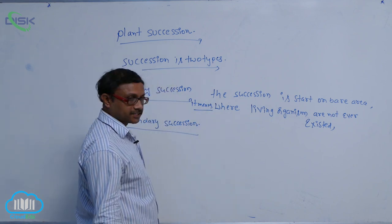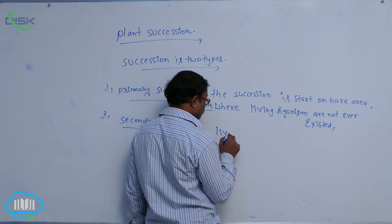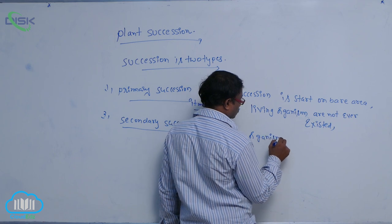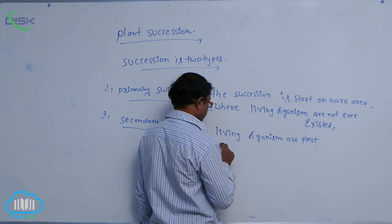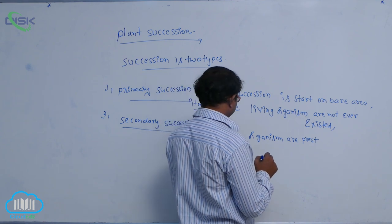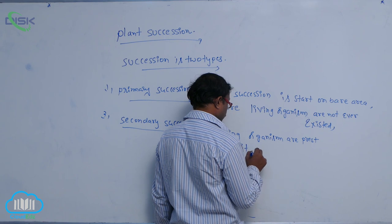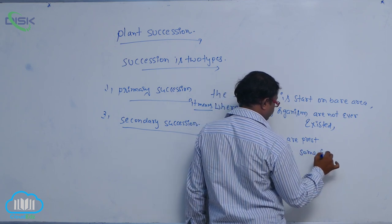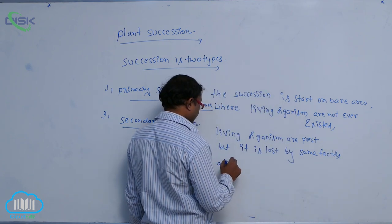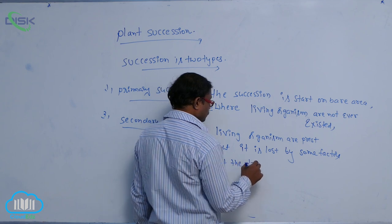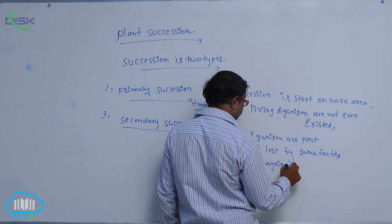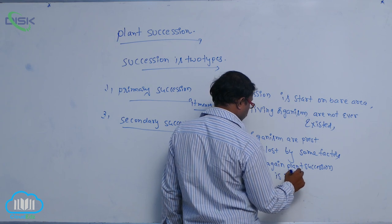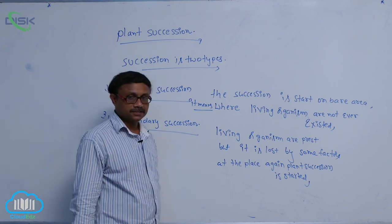In secondary succession, living organisms were present but were lost by some factors. At that place, plant succession starts again. That is known as secondary succession.